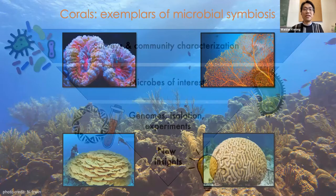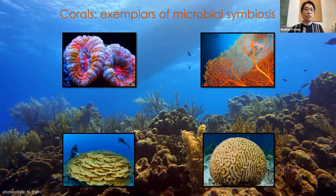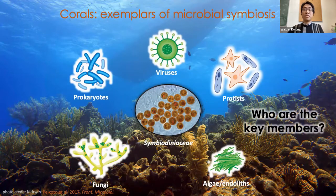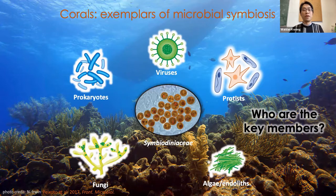My first story is about the coral microbiome. Corals are well-known icons of symbiosis. There are thousands of coral species, many of which are photosynthetic through association with Symbiodinaceae dinoflagellates. However, there are many other microorganisms also present in corals, including various algae, fungi, viruses, prokaryotes, and microeukaryotes. One of the main questions in coral microbiology research is to identify who the key members of the coral microbiome are amongst this giant messy microbial soup.